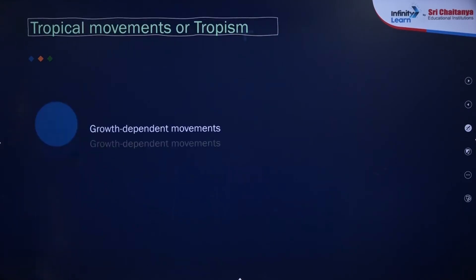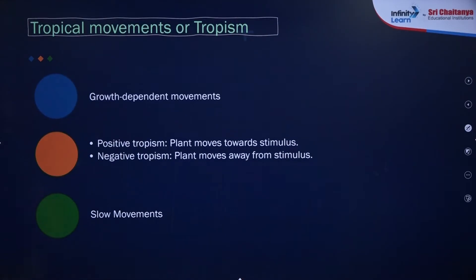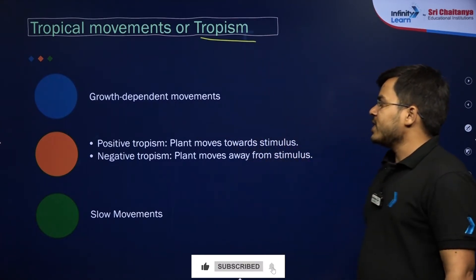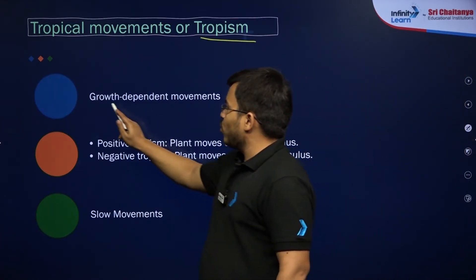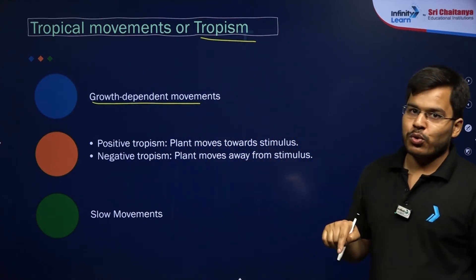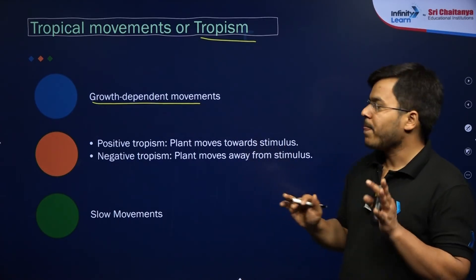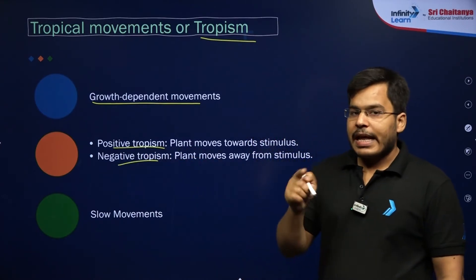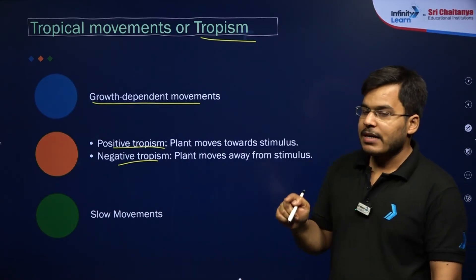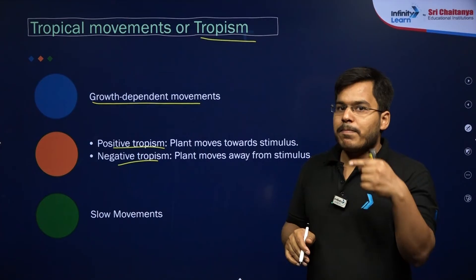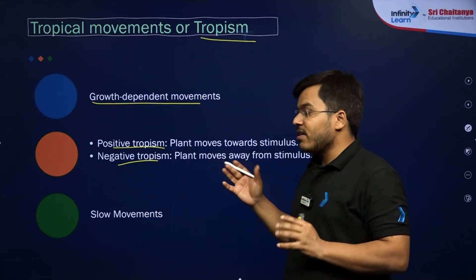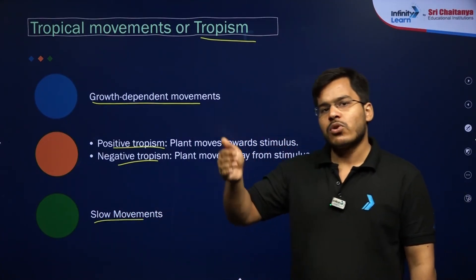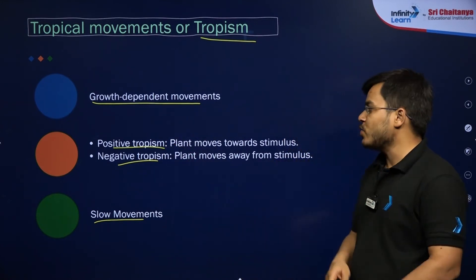Now let's talk about tropic movements, the next important type of movement in plants. These movements are also known as tropism. They are growth dependent — meaning they occur when growth is happening in the plant; if growth is not happening, these movements will not occur. They can be positive or negative tropism, and they depend on the direction of the stimulus. They are also slow movements because growth is a slow process.